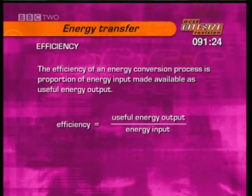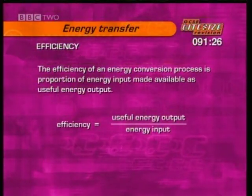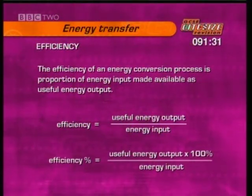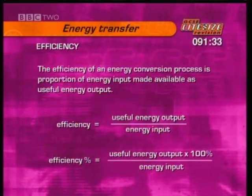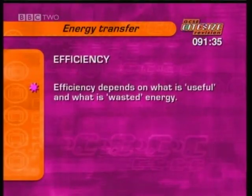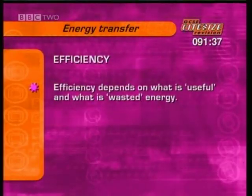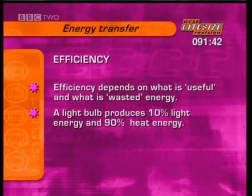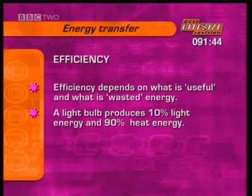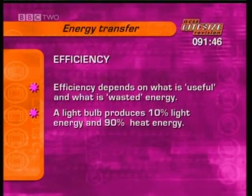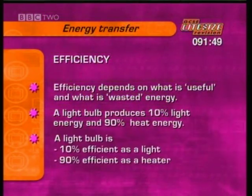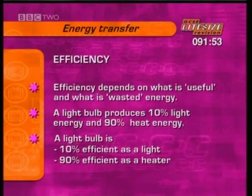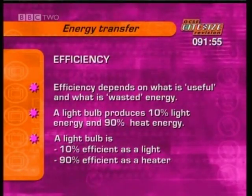As a fraction, efficiency is useful energy output divided by energy input, times 100 if you want it as a percentage. Efficiency also depends on what you mean by useful energy and wasted energy. A normal electric light bulb produces 10% light energy and 90% heat energy. So as a light, which is what we want, it's a miserable 10% efficient. If we wanted it as a heater, it would be a fantastic 90% efficient.